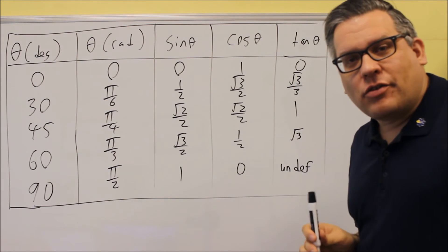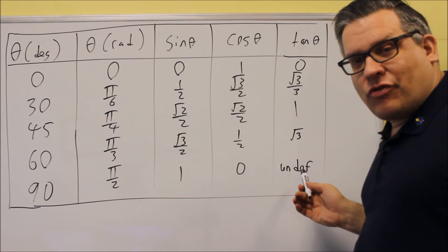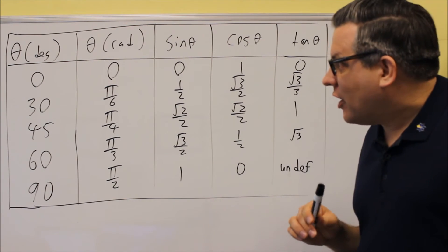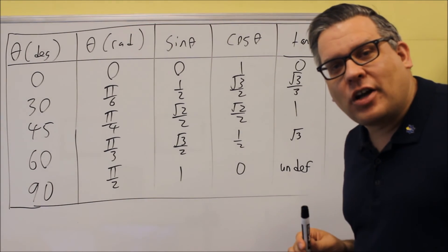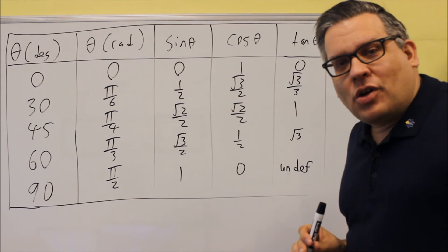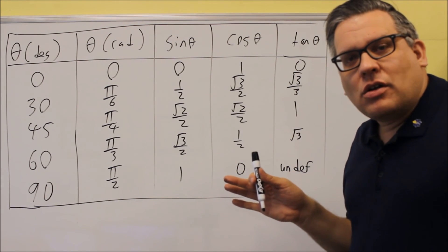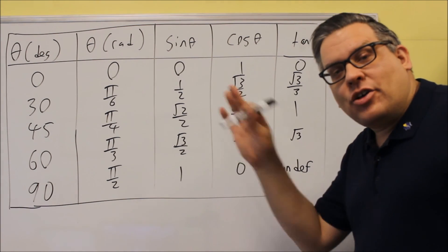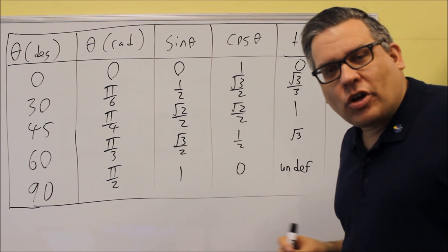There is one spot in the table that's undefined — tangent of 90 degrees. Since tangent equals the y value over the x value, or sine over cosine, taking 1 divided by 0 gives undefined. The next video will combine all of this into a full unit circle, but it all comes from these same values we just derived by looking at those special triangles.